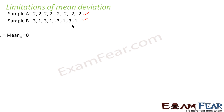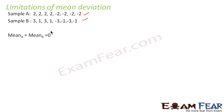Now for both samples, the mean is 0. If you take the mean of sample A, you add all the values — this becomes 0 divided by 8, which is 0. Sample B also becomes 0. So the mean of both samples is 0.